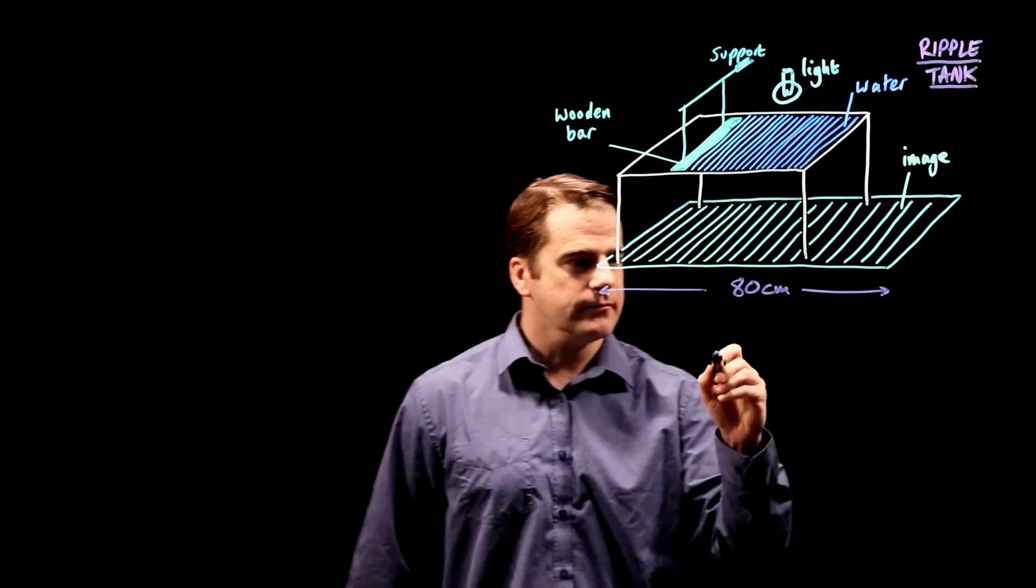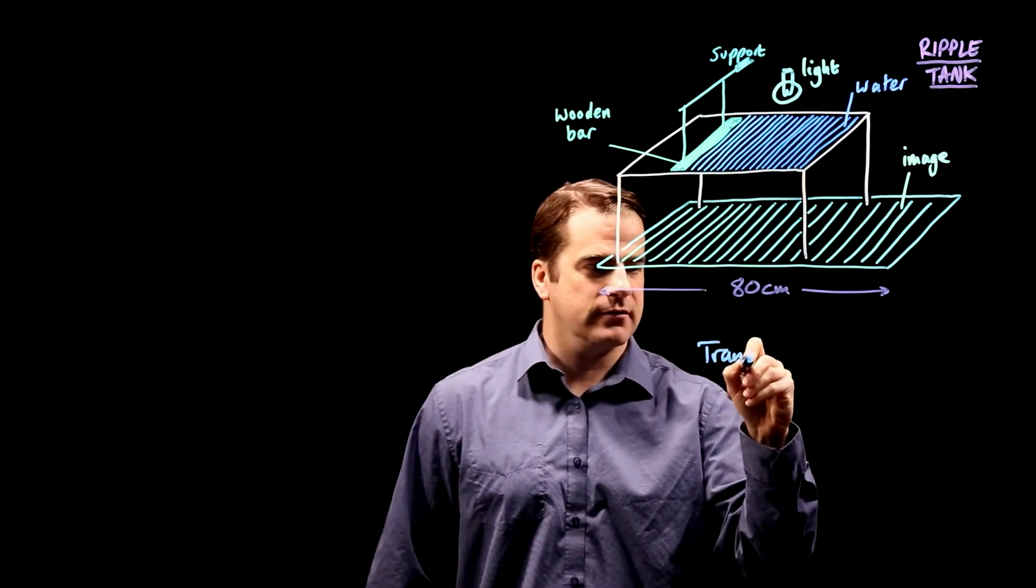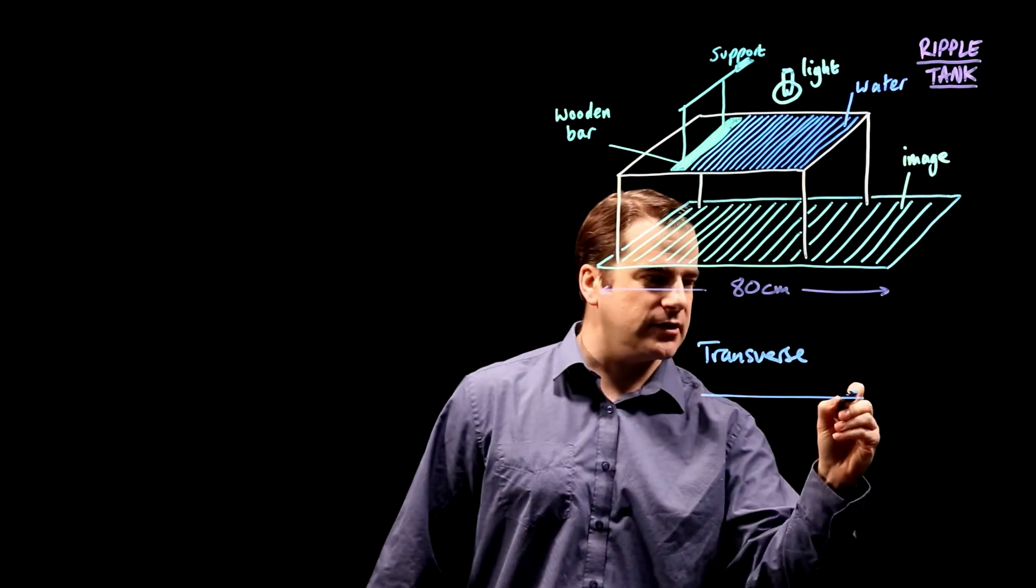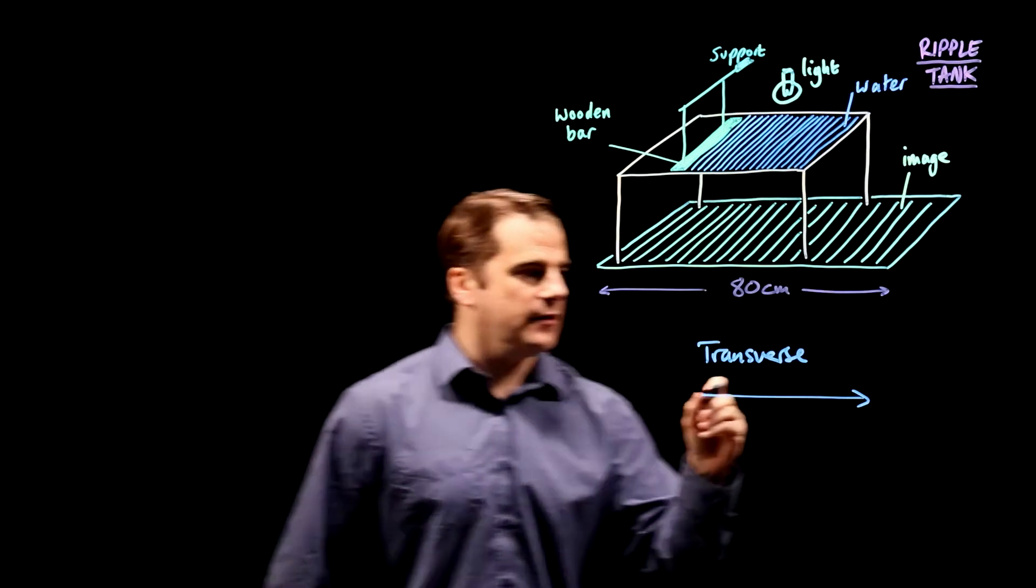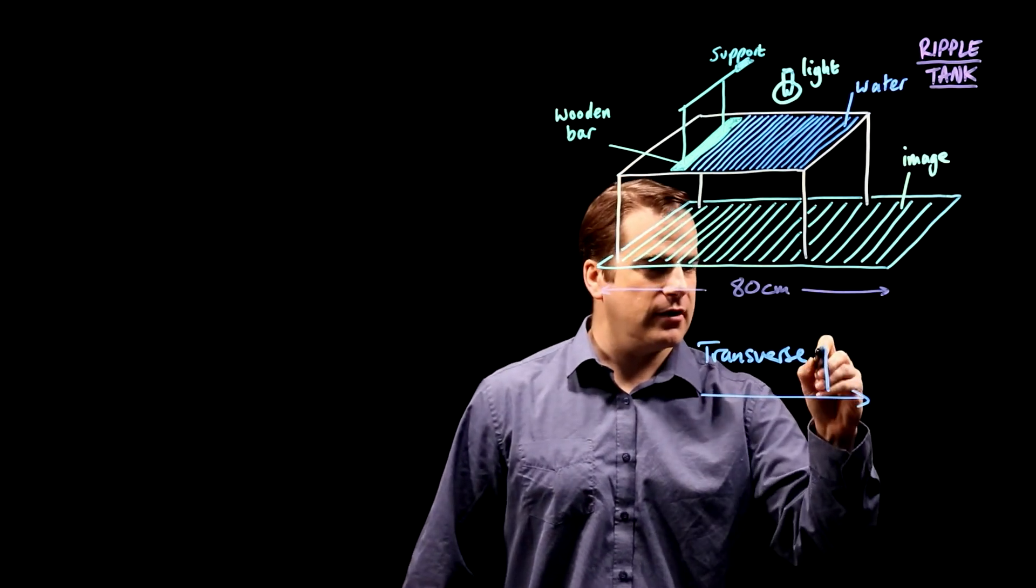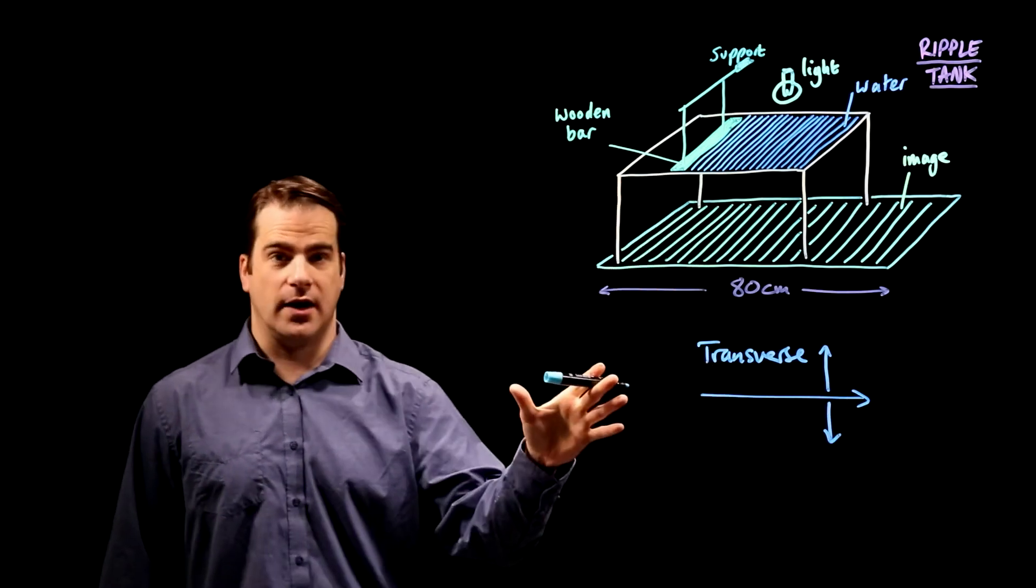So if we have a transverse wave, if it's going in this direction, right, then the oscillations are up and down like that. For example, a light wave.